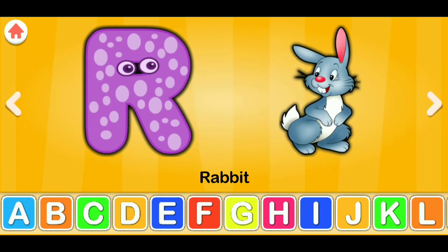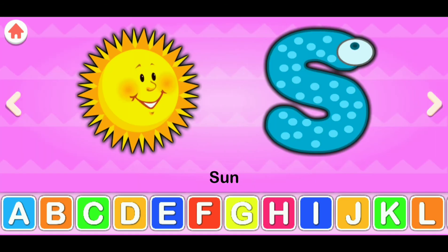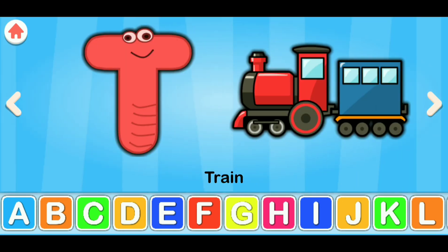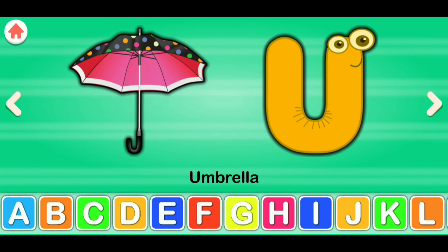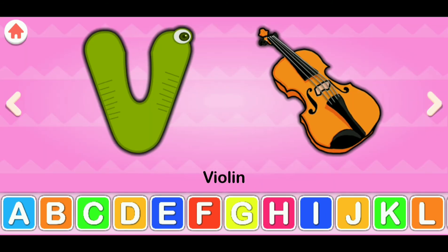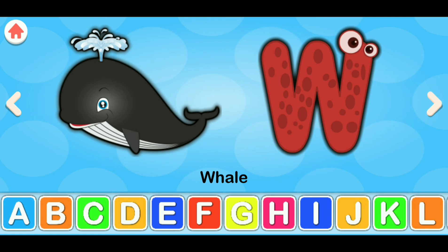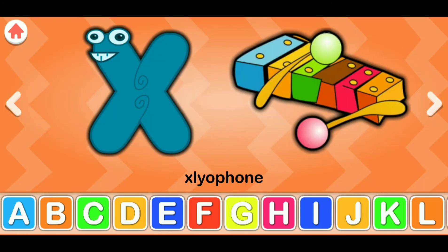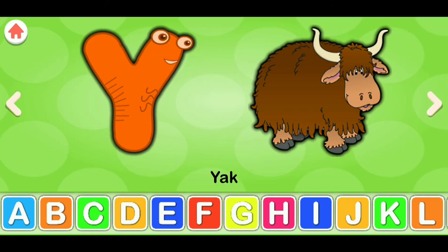R for rabbit, S for sun, T for train, U for umbrella, V for violin, W for whale, X for xylophone, Y for yak.